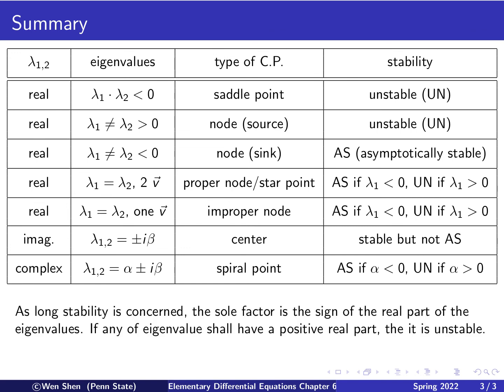We make the final observation that as long as stability is concerned, the sole factor for real or complex eigenvalues is the sign of the real part of the eigenvalues. If any eigenvalue shall have a positive real part, then it is unstable.